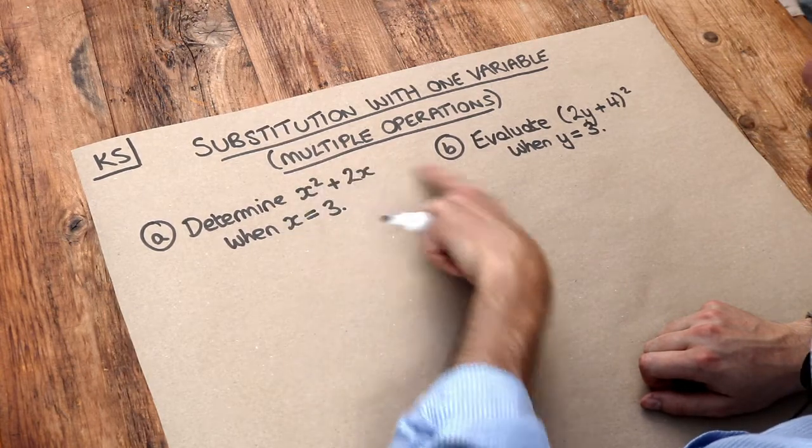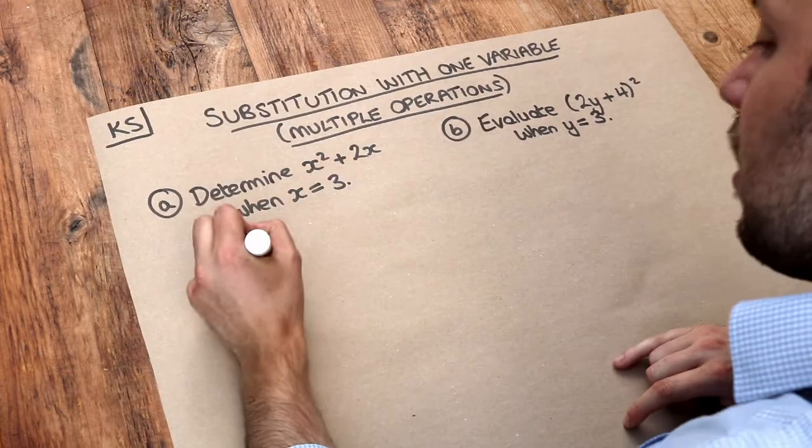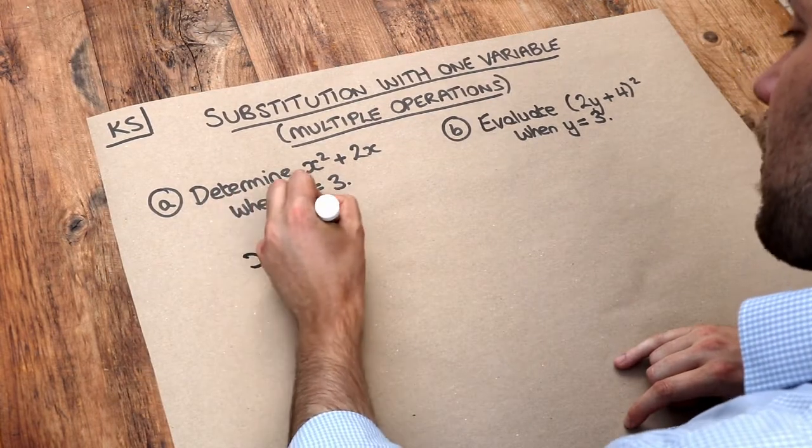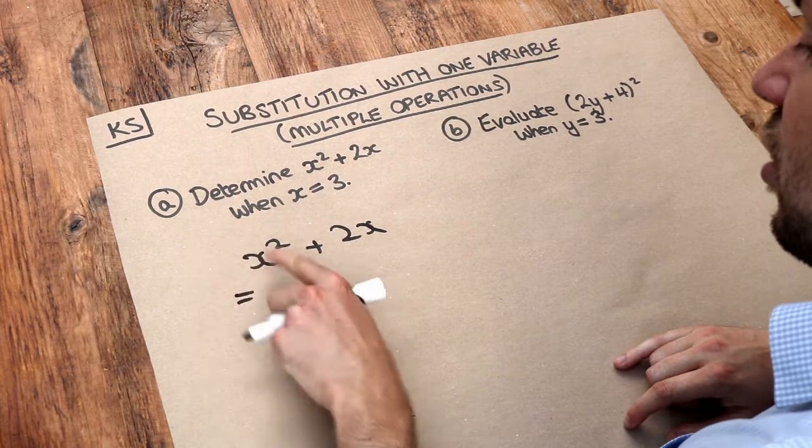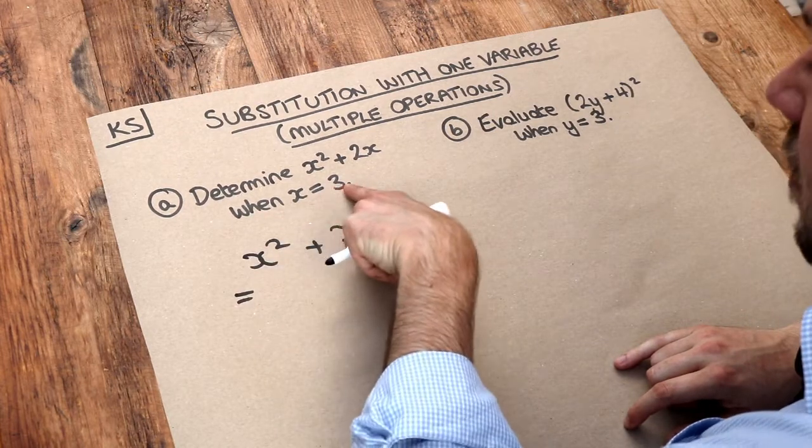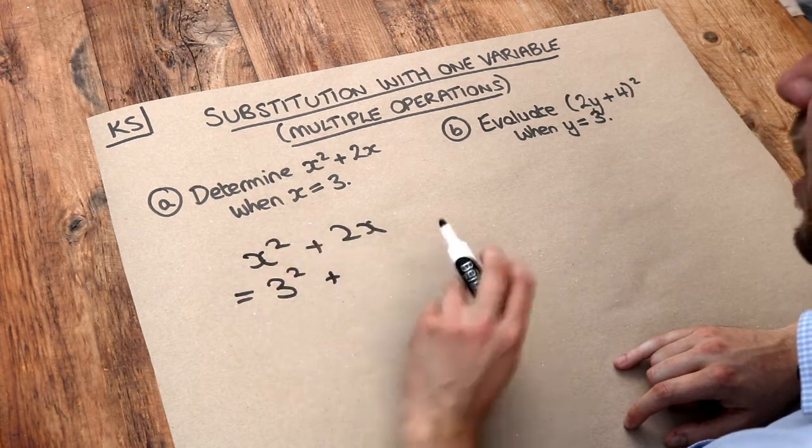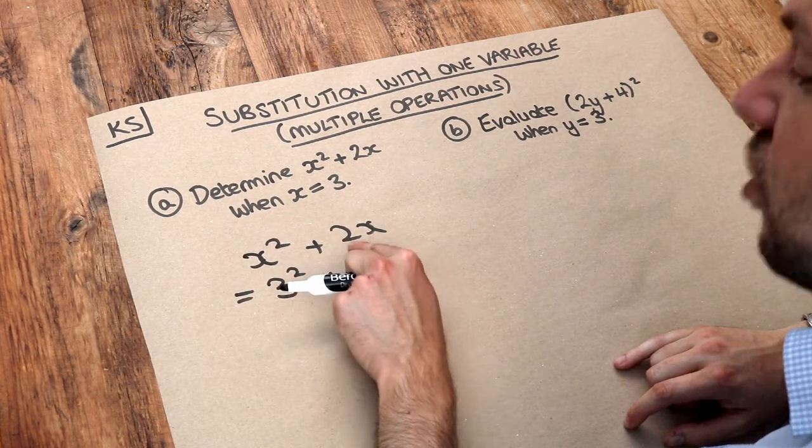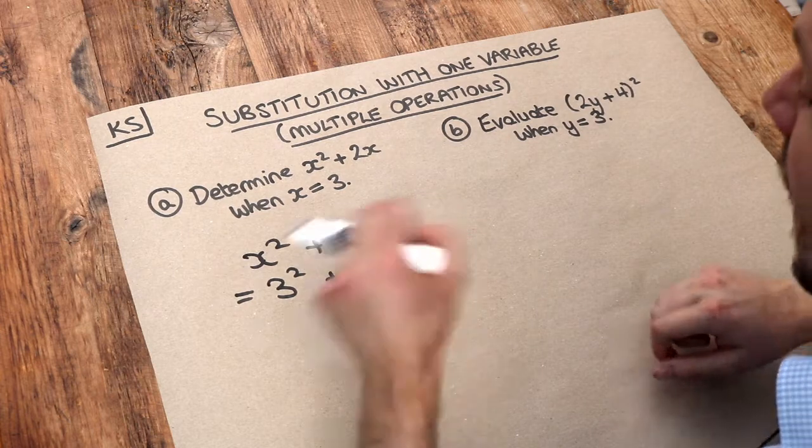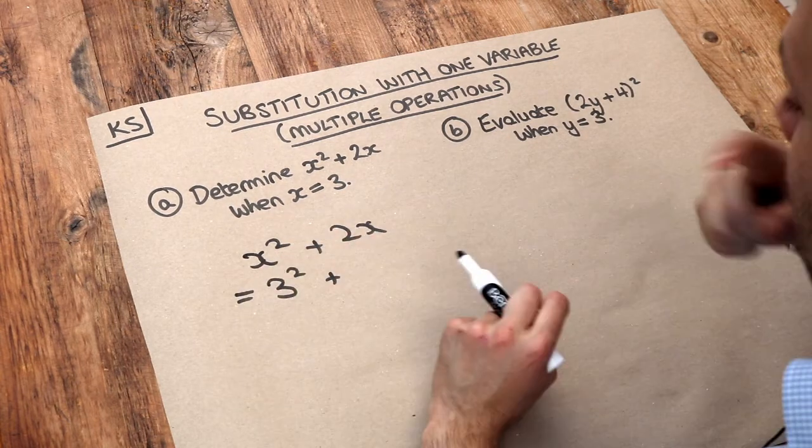To find the overall value of x squared plus 2x, we just write out the expression again. I'm going to replace each occurrence of x with its value which is 3. So x is 3 squared plus 2 times 3, because remember 2x means 2 times x. In algebra, when things are next to each other it means you times them.